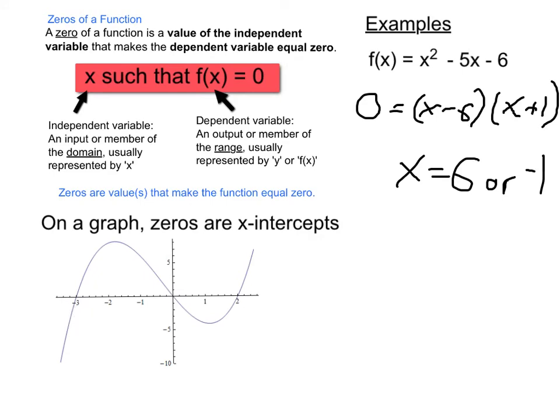On a graph, we can easily see where the function is equal to zero because that's where it crosses the x-axis. So if this were a function f(x), its zeros would be negative 3, 0, and 2.